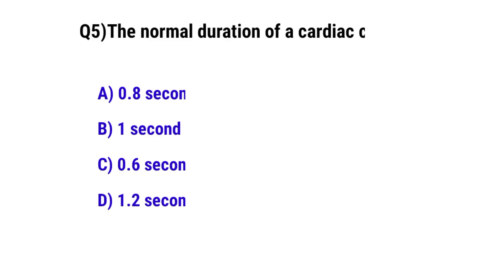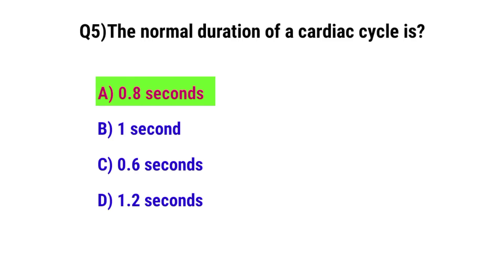Question No. 5: The normal duration of cardiac cycle is — the correct option is A: 0.8 seconds.